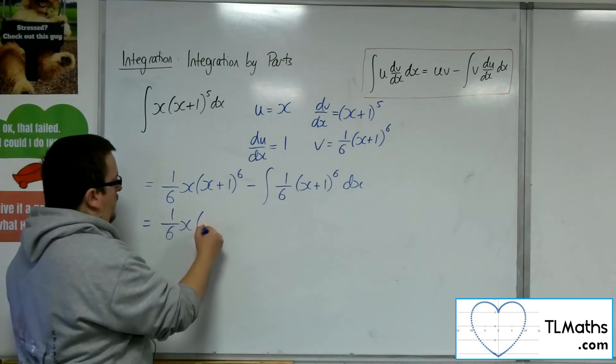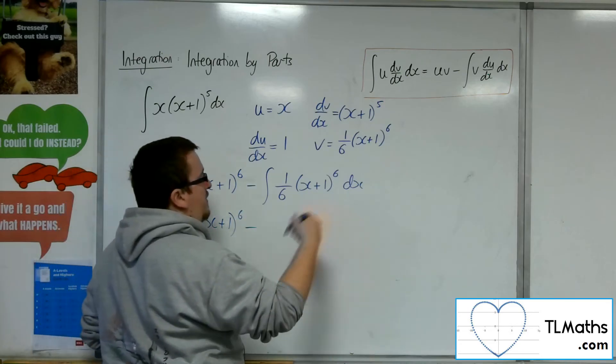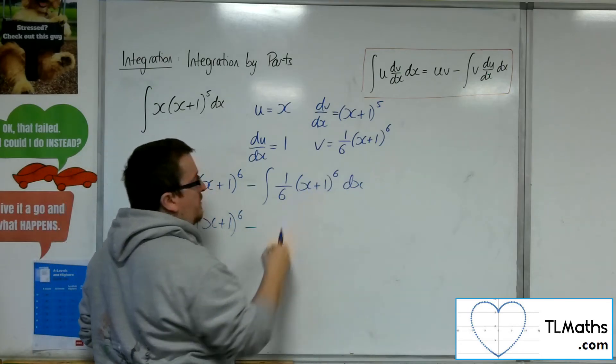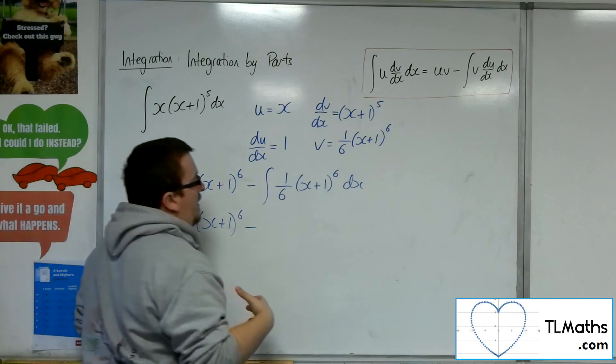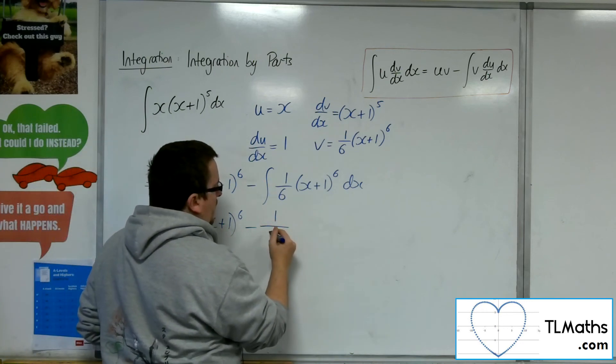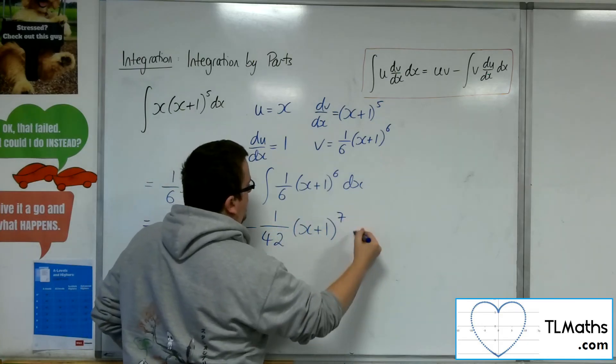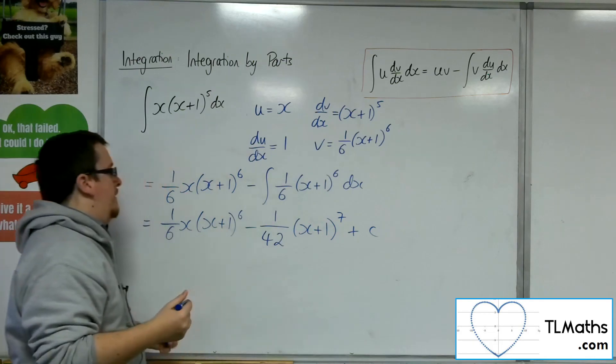So 1 sixth x, so 1 sixth x plus 1 to the 6, take away, add 1 to the power, divide by the new power, plus we've got the derivative of what's inside, divide by that as well. So we've got 1 over 6, 7, so 42, x plus 1 to the 7, plus your constant C of integration.